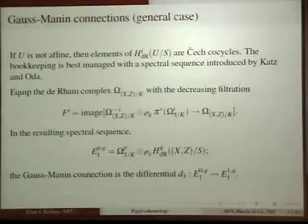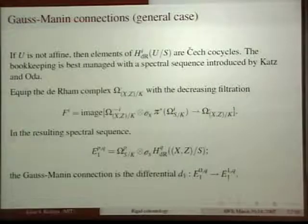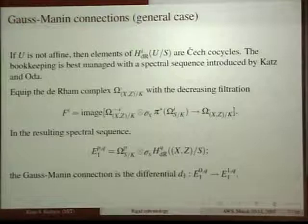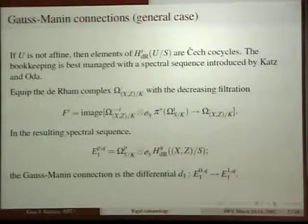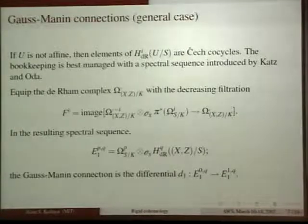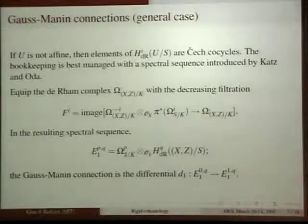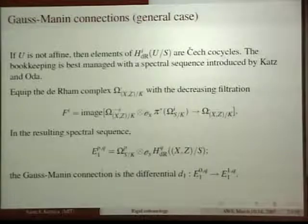That was a definition slash theorem. The definition is this in algebraic de Rham cohomology. The theorem is that if you do this with C-infinity or complex analytic de Rham cohomology, you actually get the classically defined Gauss-Manin connection — which comes from locally trivializing your morphism, which you can do analytically but not algebraically. So this gives you back the differential geometer's Gauss-Manin connection, and it defines something in algebraic geometry, and it agrees with the recipe I gave on the previous slide. Now, example time — I always use the same example in these talks. It's always an elliptic curve — now it's a family of elliptic curves.